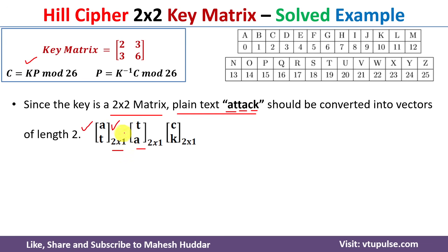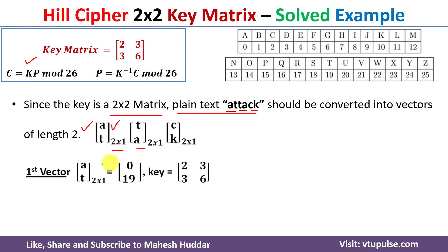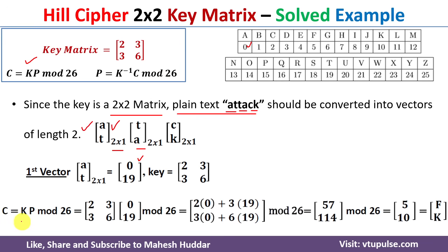We use the encryption equation to convert the plaintext into ciphertext. For the first vector containing A and T: the code for A is 0 and the code for T is 19. Using the equation C = KP mod 26, K is the key matrix and P is the plaintext vector [0, 19]. We take the multiplication between these two matrices and then apply mod 26 to the results.